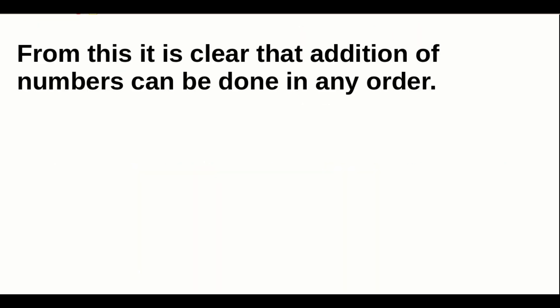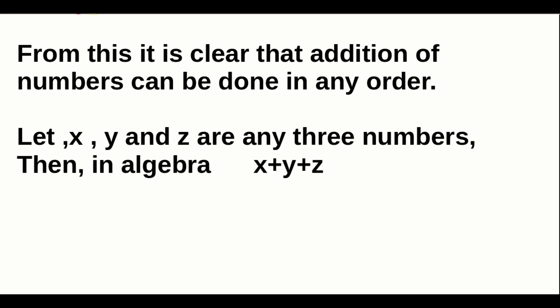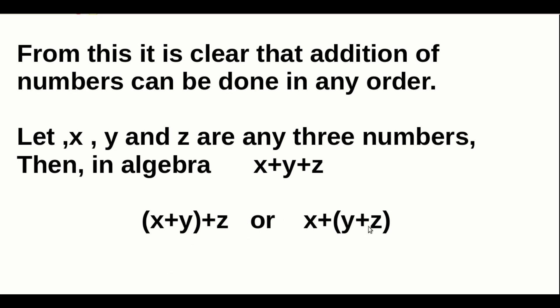From this it is clear that addition of numbers can be done in any order. In Algebra, let X, Y, and Z be any three numbers. Then X plus Y plus Z can be computed as either (X plus Y) plus Z, or X plus (Y plus Z) — first add X and Y then add Z, or first add Y and Z then add X.